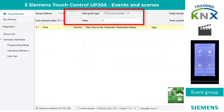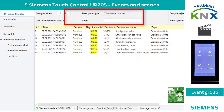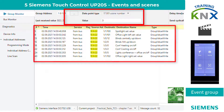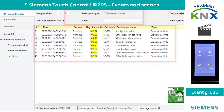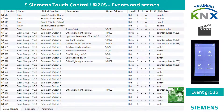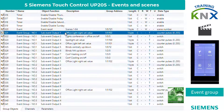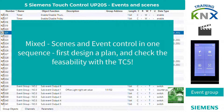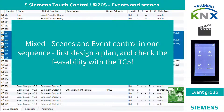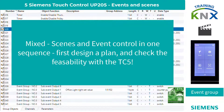Now scene number 3: all 8 telegrams come from event group 1 and without time delay. Normally, however, one has mixed forms between pure scene and pure event control. In that case, you should make a plan before parametrization to see if it can be realized with the TC5.